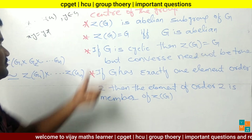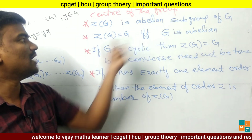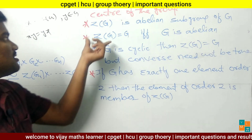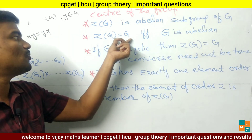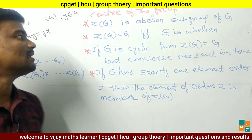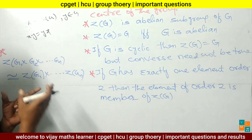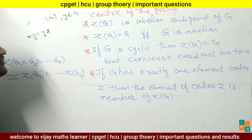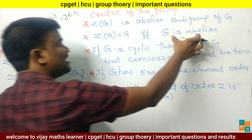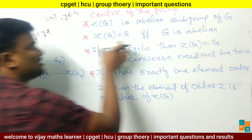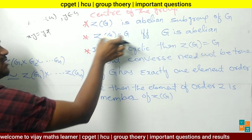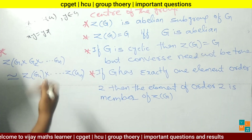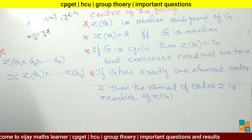The next point: Z(G) equals G if and only if G is abelian. That is, the center of the group equals the group itself only when G is abelian.